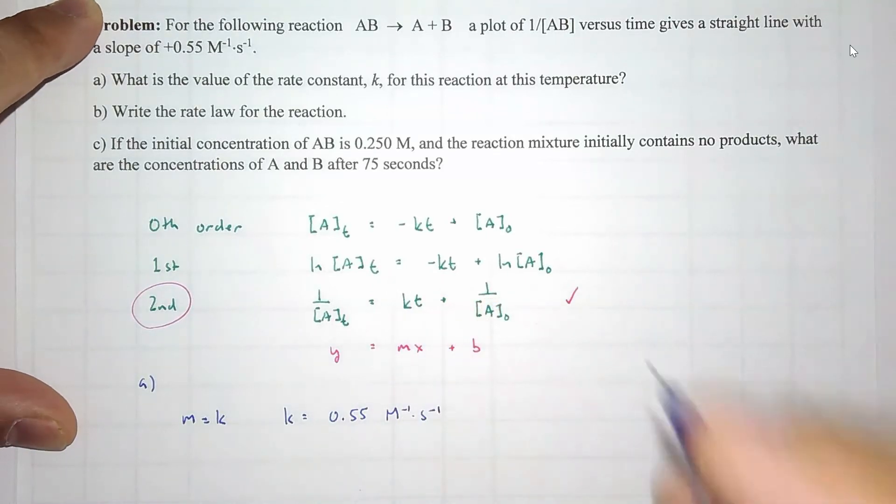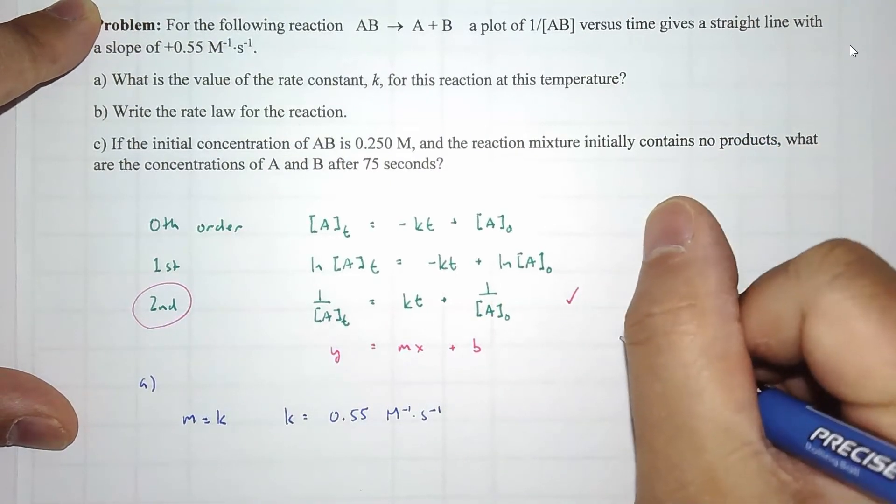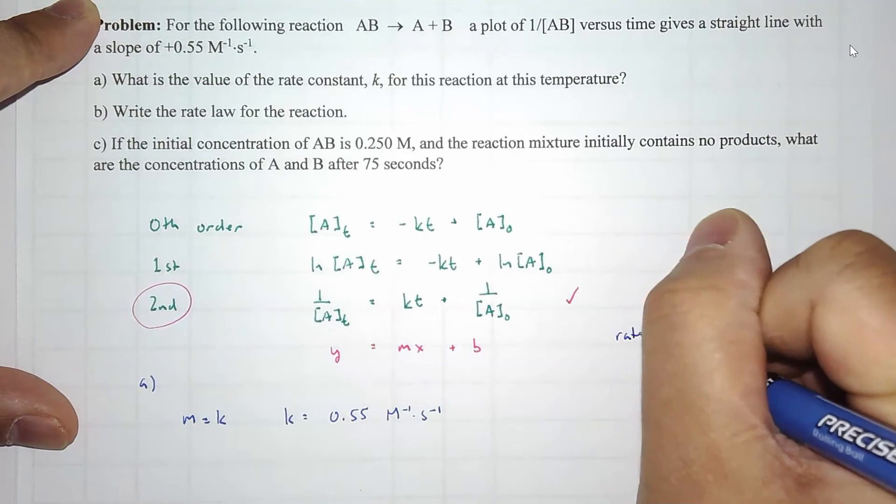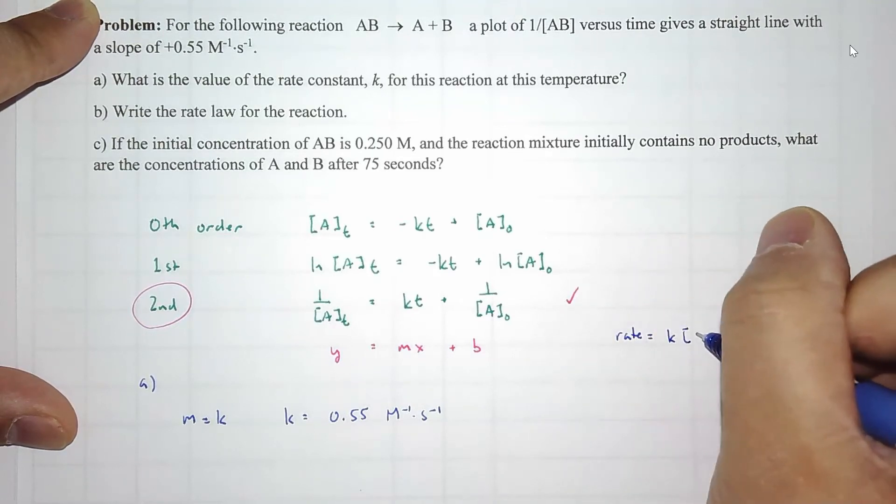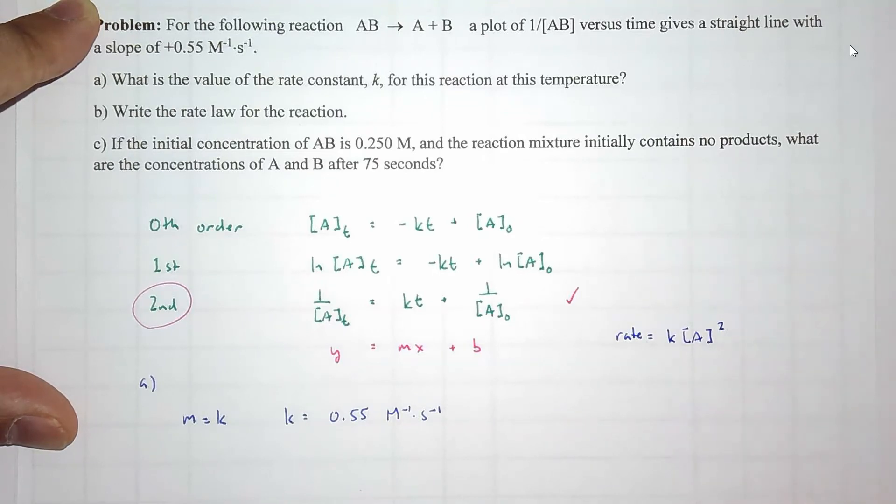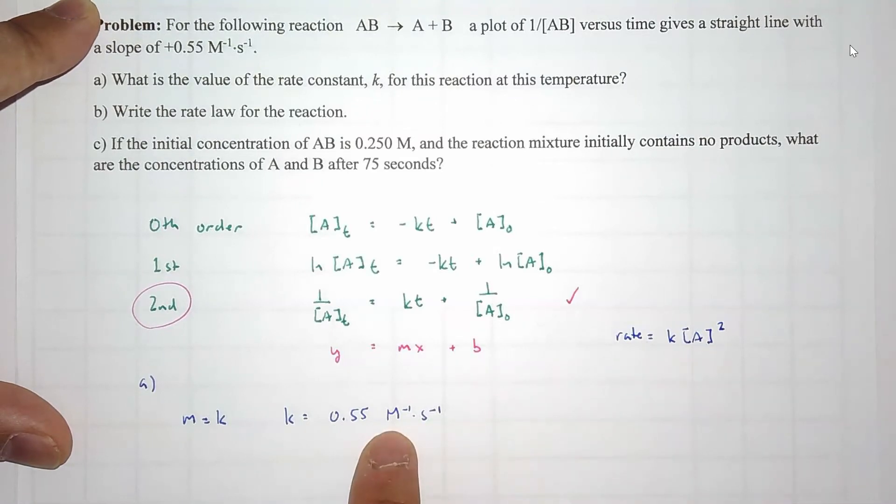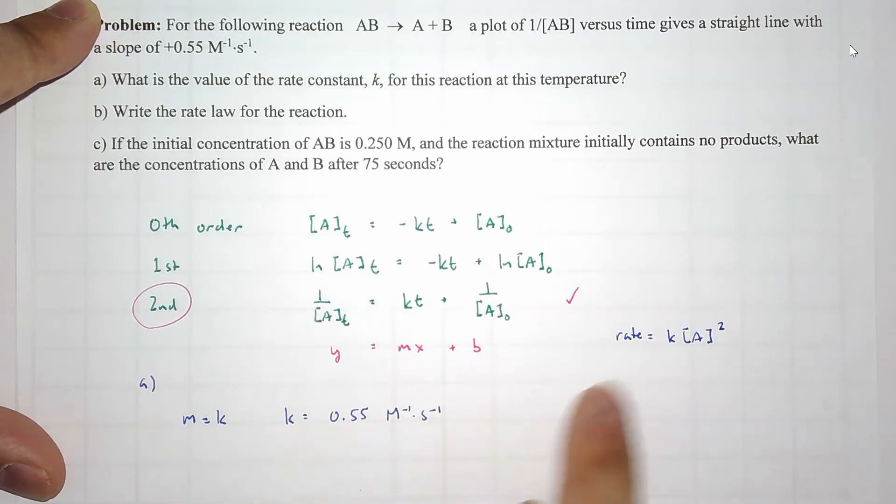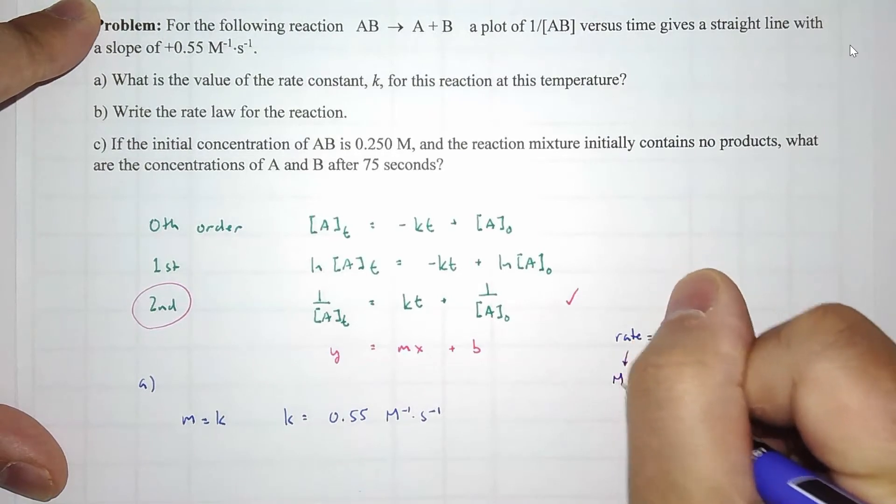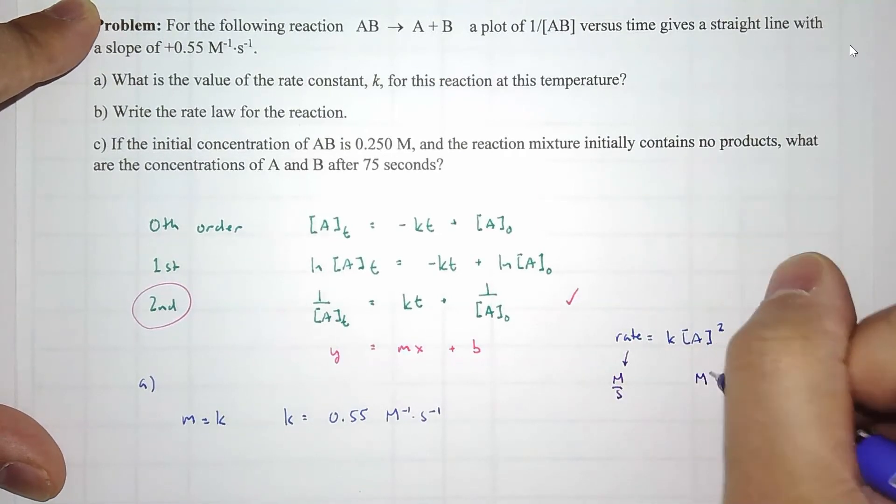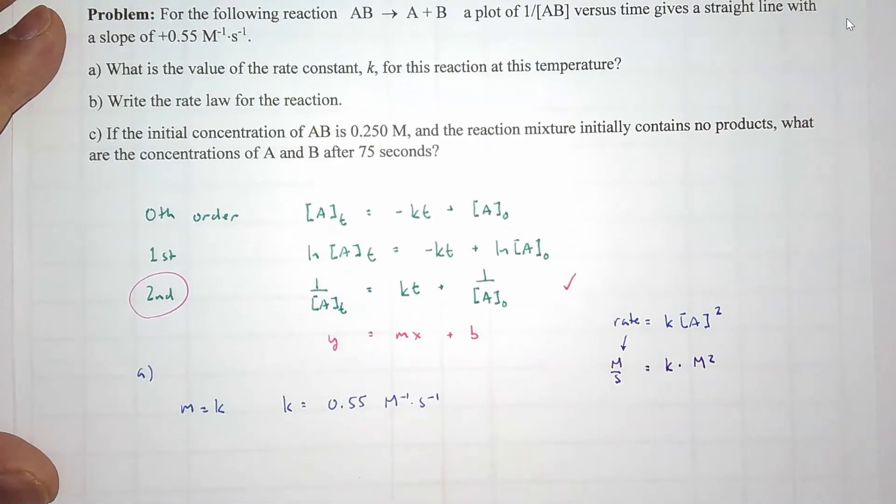Why do the units make sense? Because the rate law for second order equation is rate equals k times the concentration of the starter material raised to the second power. That's molarity squared. Molarity squared times molarity inverse times the second gives us a rate of molarity over seconds. So k has to be M^-1 s^-1. That's the answer for part A.